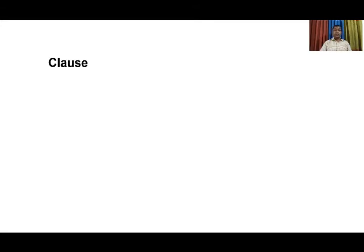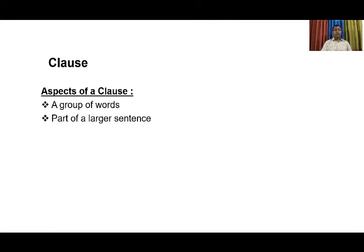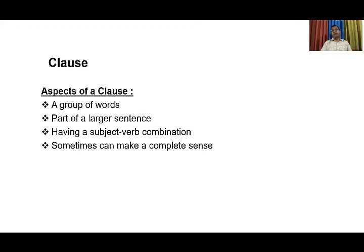Sometimes a clause can be used independently just like a sentence. But when that sentence becomes a part of a larger sentence, it becomes a clause. To highlight the main aspects of a clause: firstly, it's a group of words; secondly, it's part of a larger sentence; thirdly, it has a subject-verb combination; and fourthly, it sometimes can make a complete sense. These are the main aspects of a clause.